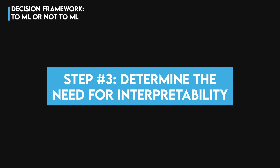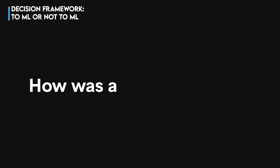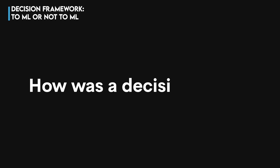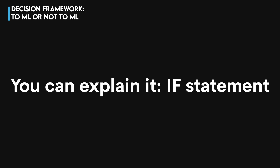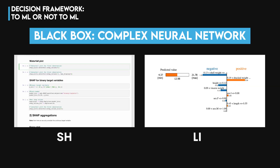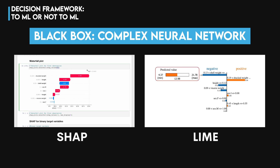Step 3: determine the need for interpretability. Do you need to explain how a decision was made to a customer, a regulator, or an internal auditor? A simple if statement is truly interpretable. A complex neural network, even with post-hoc explainability tools like SHAP or LIME, is still a black box.